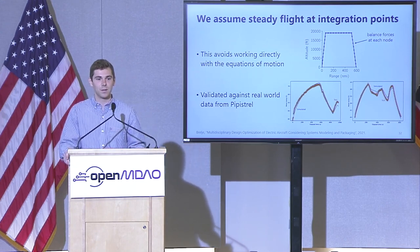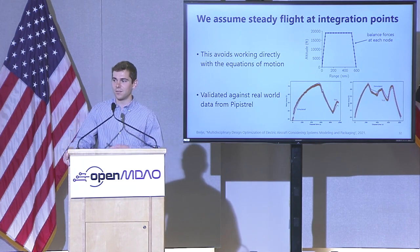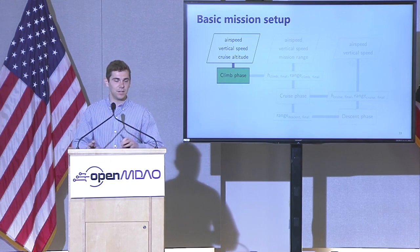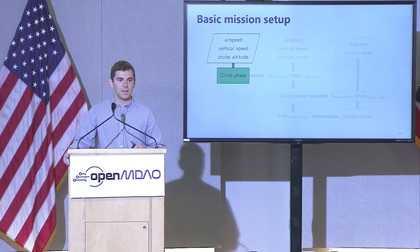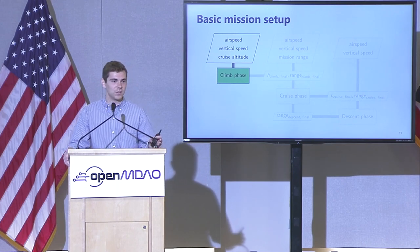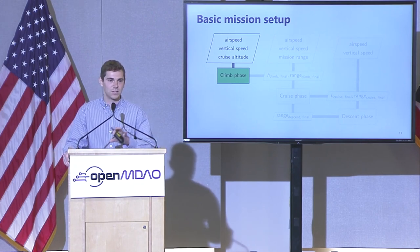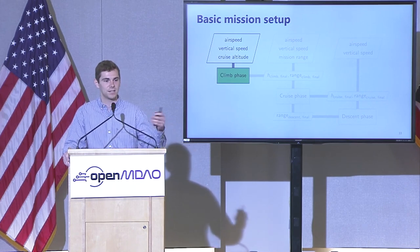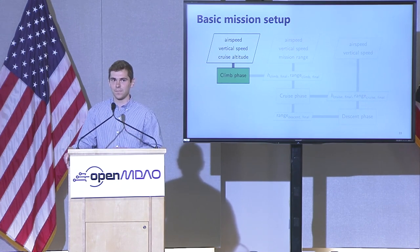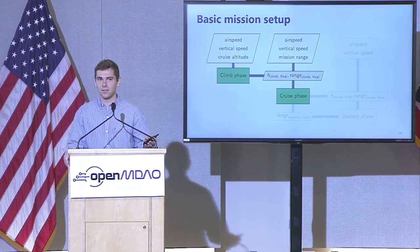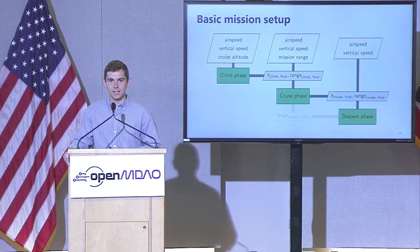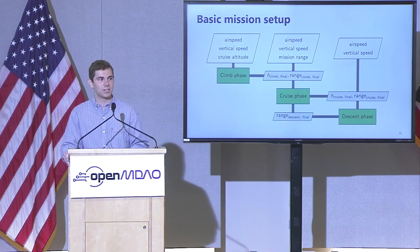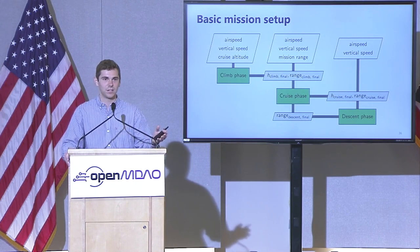Ben matched data from Pipistrel's flight test with OpenConcept really well. In general, every steady flight phase takes in an airspeed and vertical speed to define the mission profile. But those alone don't tell you how long a phase needs to be. Each phase is designed in a custom way: the climb phase takes in cruise altitude and the duration is set such that you're at cruise altitude at the end. For cruise, you use mission range to figure out how long cruise needs to be. The descent phase ends when you reach back to the ground, but you pass the range at the end of descent back to the cruise phase — a little bit of backward coupling.